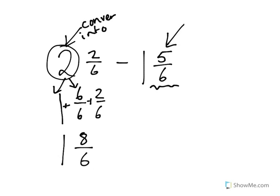Then I have my subtraction sign, 1 5/6. Now I can do 1 take away 1 is 0, so I don't need to write it. And then I have 8/6 minus 5/6.